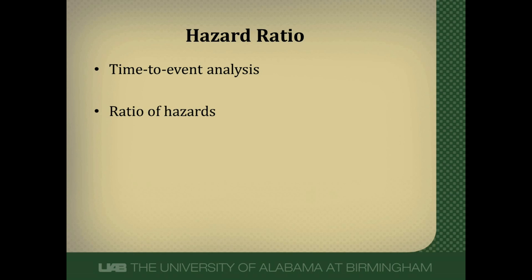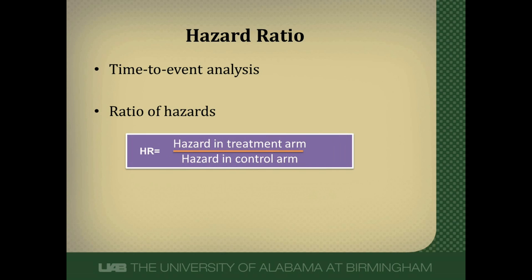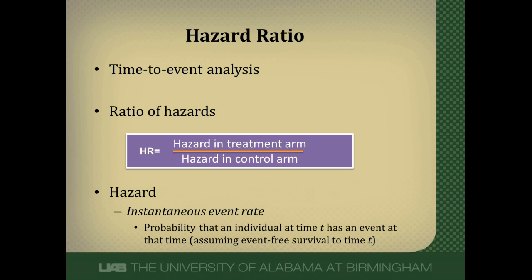A hazard ratio is just that — a ratio of hazards. It's the hazard in the treatment arm divided by the hazard in the control arm. A hazard is an instantaneous event rate, meaning the probability that an individual at a small period of time t has an event at that particular time, assuming the person has survived to that point without having any events. So an instantaneous event rate is the probability that an individual at any given time is going to have an event.